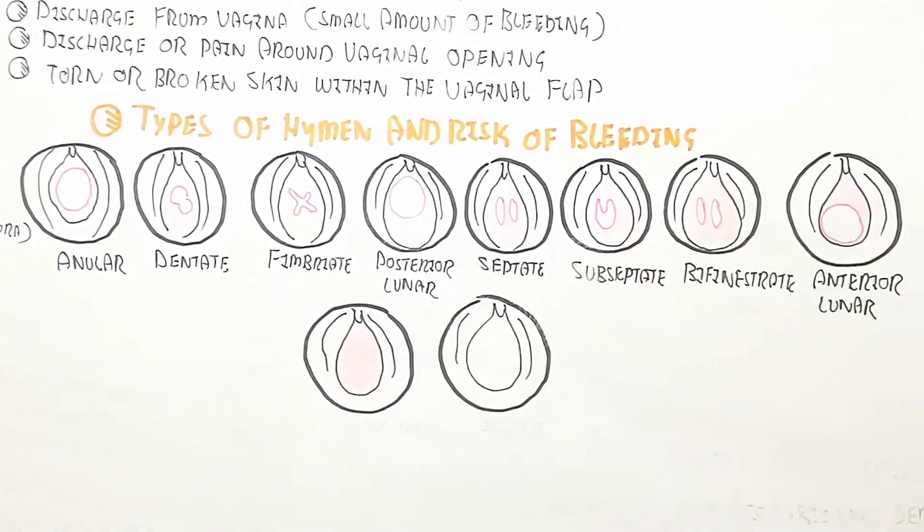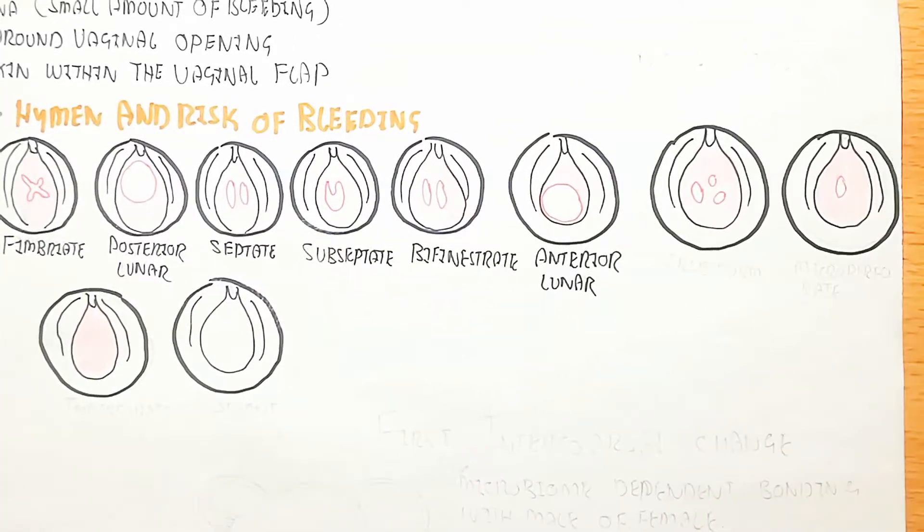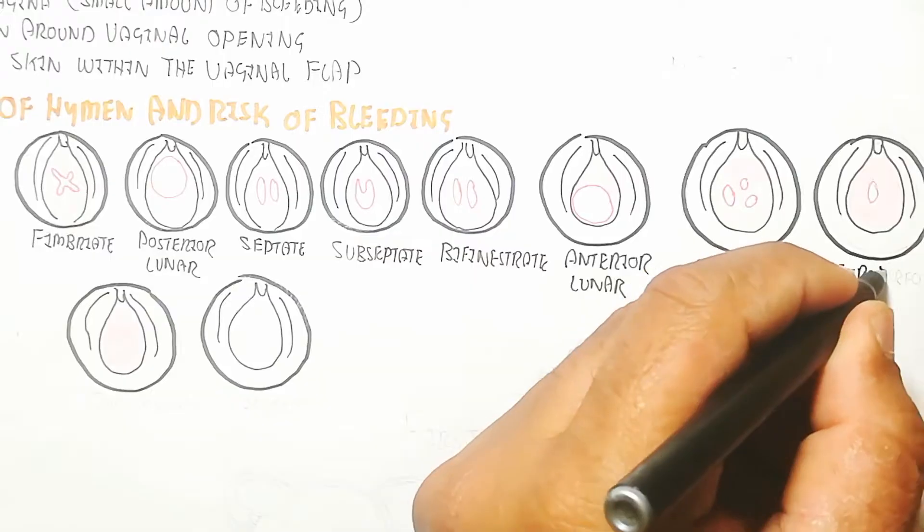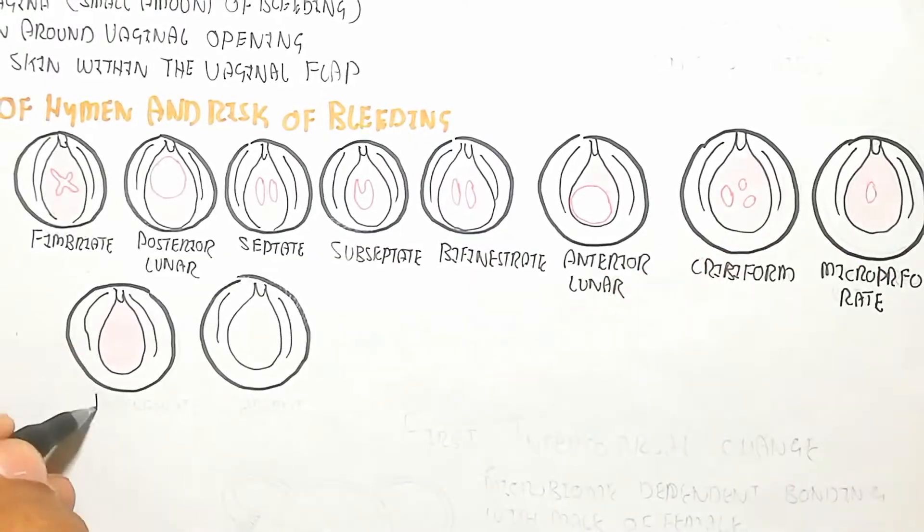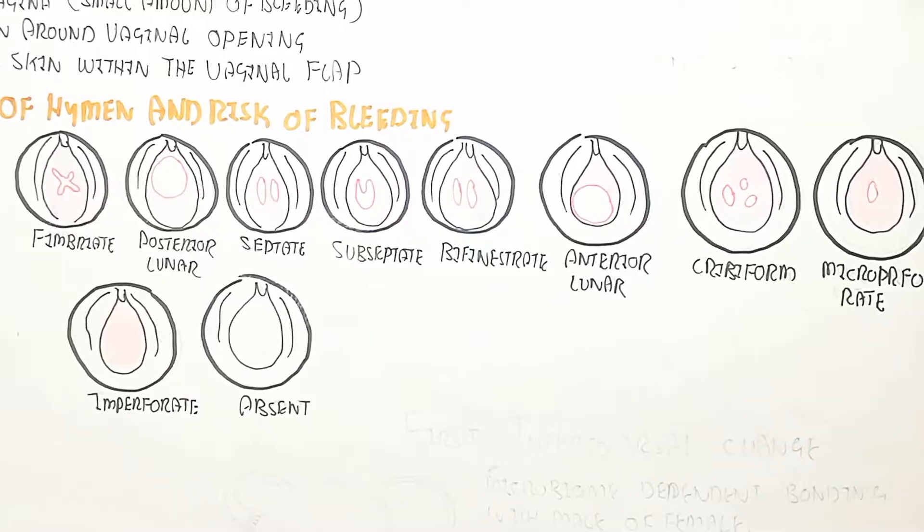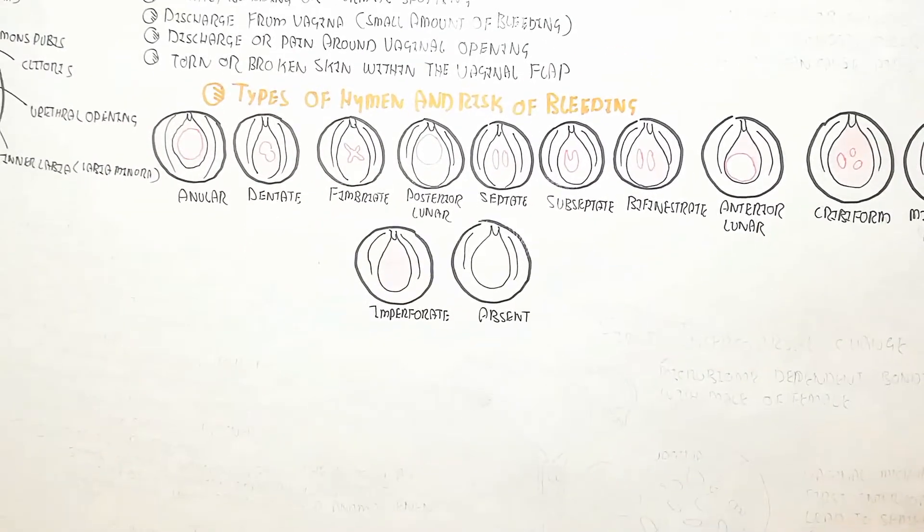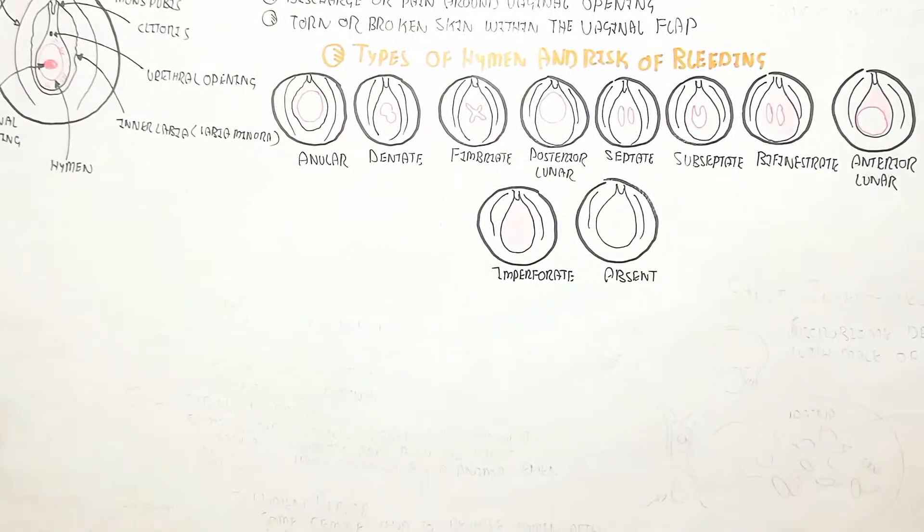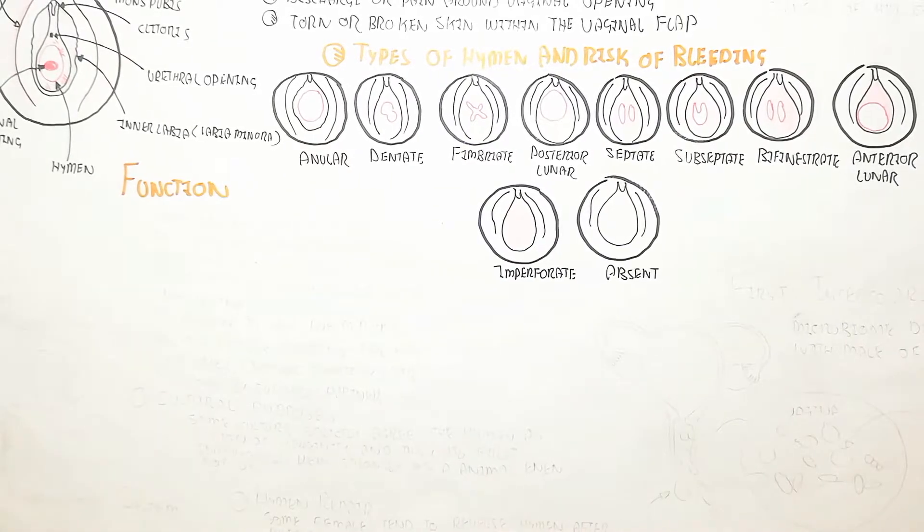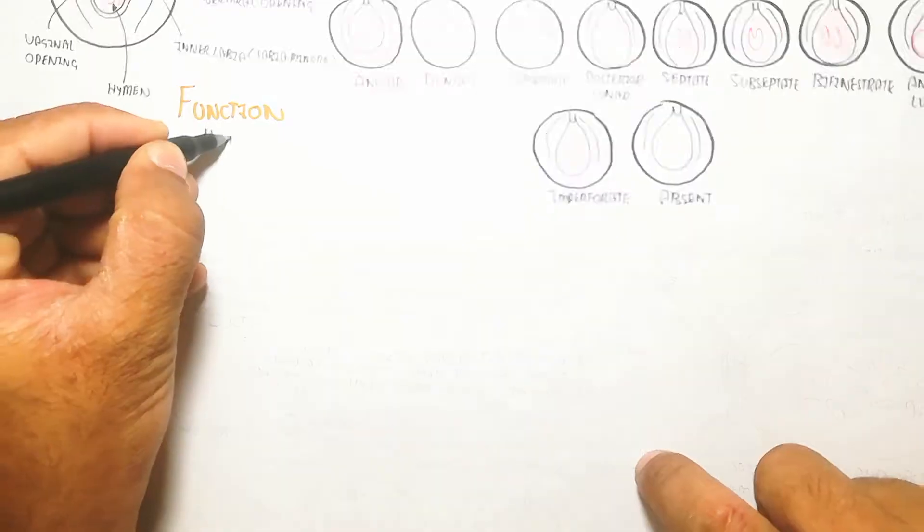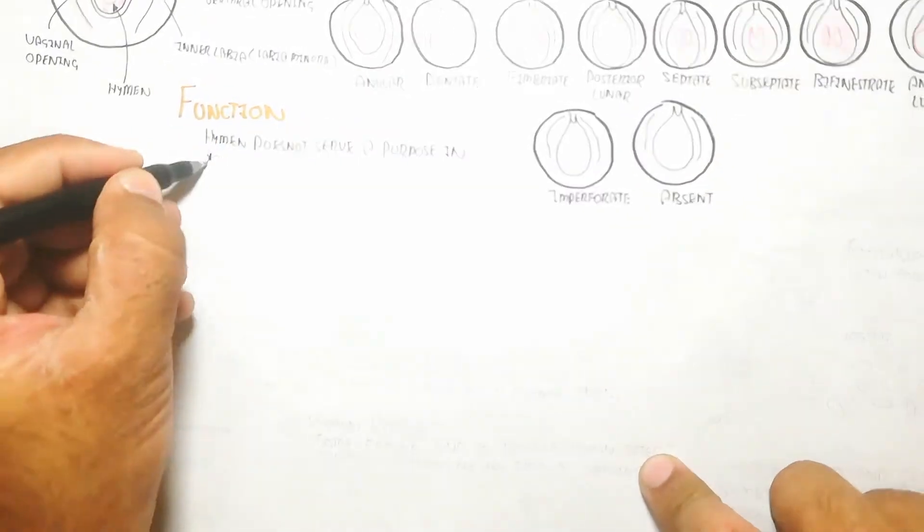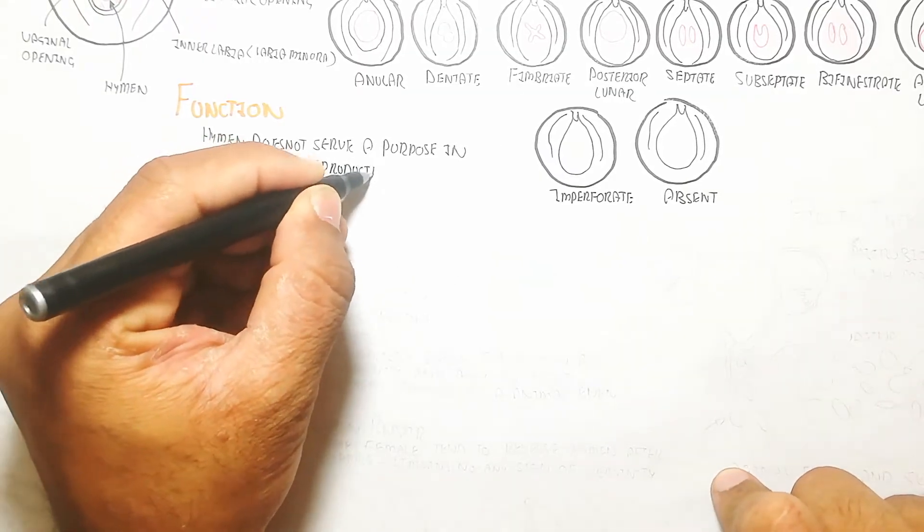Posterior lunar causes less bleeding, while subseptate has more chance of bleeding. Bifenestrate and anterior lunar have less chance, while cribiform has pores and more chance of bleeding. Microperforate also has a chance of bleeding, while imperforate has more chance, and absent is absent.